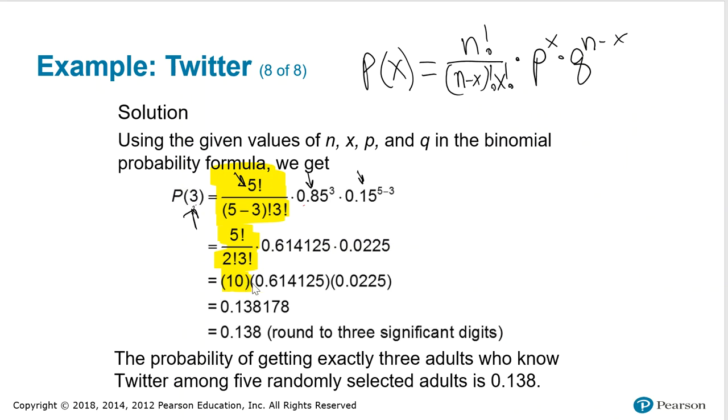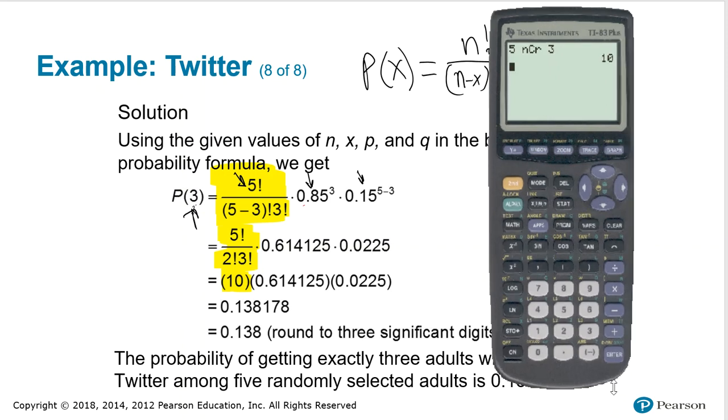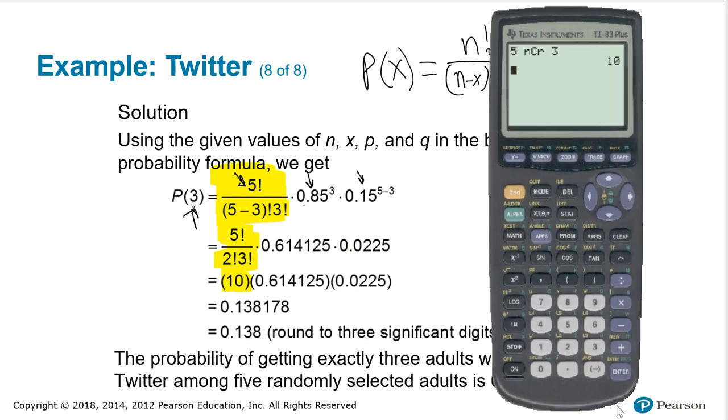So there's ten possible arrangements of selecting three out of five items. So it's ten. That's a little shortcut without having to try to deal with that factorial key.